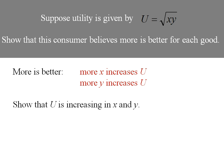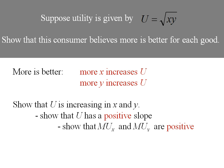So one thing we could do is show that U is increasing in x and y by looking at its slope. Now if utility has a positive slope it's increasing in x and y. So what we can show is that the marginal utilities are positive.